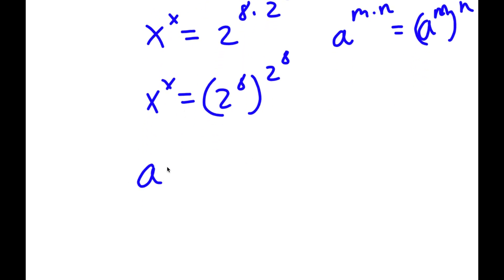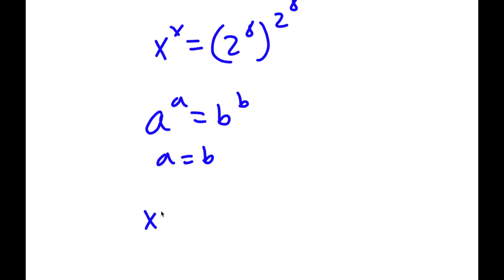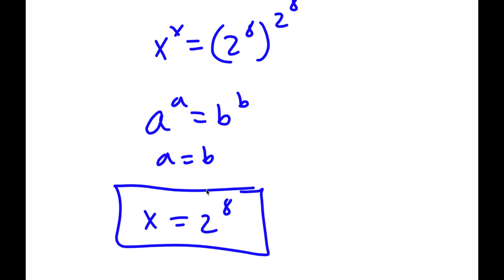Now, if I have something in the form a to the power of a equals b to the power of b, this means a equals b. So in this case, x equals 2 to the power of 8. That's my answer to this problem.